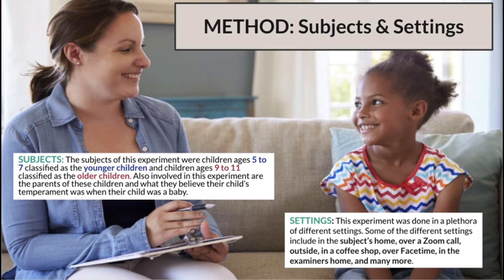For the method, subjects, and settings: the subjects of this experiment were children ages 5 to 7, classified as the younger children, and children ages 9 to 11, classified as the older children. Also involved are the parents of these children and what they believed their child's temperament was when their child was a baby. The experiment was done in a plethora of different settings, including the subject's home, over a Zoom call or FaceTime if unable to meet in person, outside in a driveway or at a park, in a coffee shop, or in the examiner's home.